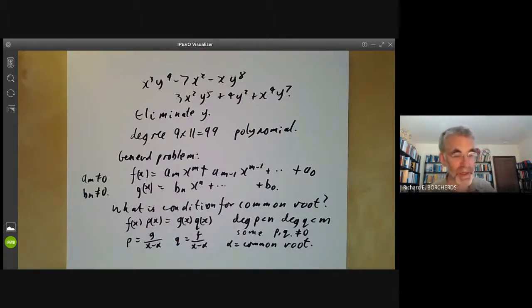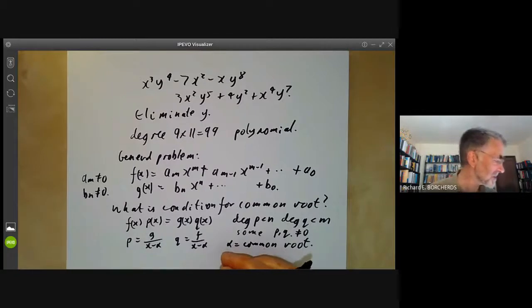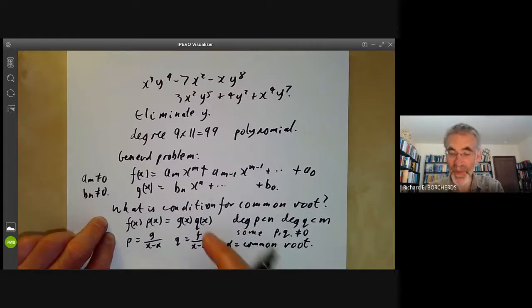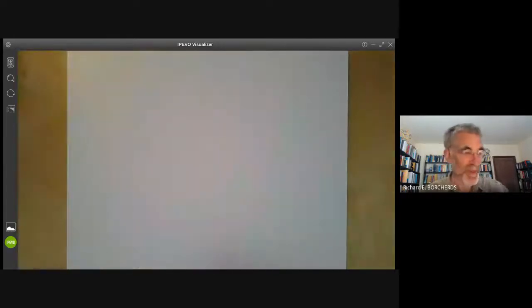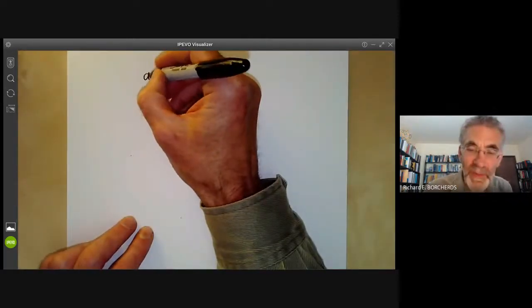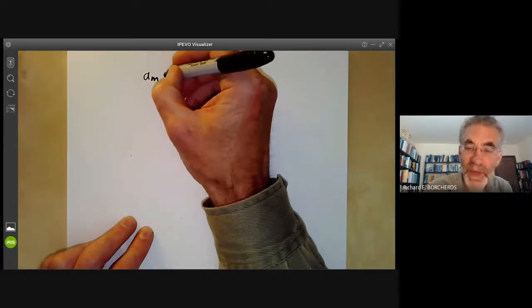Now, the condition for a set of homogeneous linear equations to have a non-trivial solution is that some big determinant vanishes. So we have to write down a determinant that vanishes if this has a common solution, which basically means writing down the matrix of all these equations. And the matrix, it's not difficult to work it out, but it just requires a certain amount of bookkeeping.